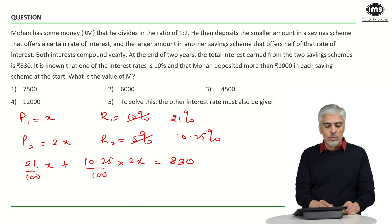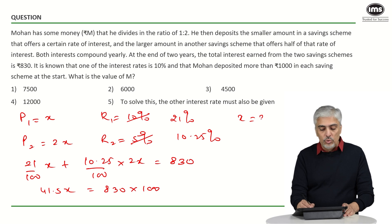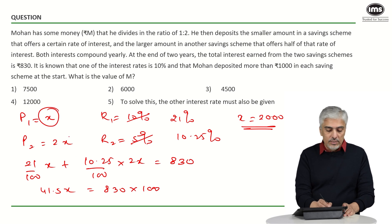Solve this 21 plus this will become again 20.5. 10.25 into 2 will be 20.5. So, 21 plus 20.5 will be 41.5 will be 830 into 100. So, this will go 2 times so x will come out to be 2000. Now, x is 2000. What is your total investment? 2000 plus 4000. So, total investment is 6000.